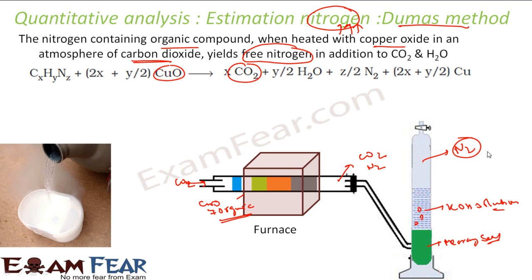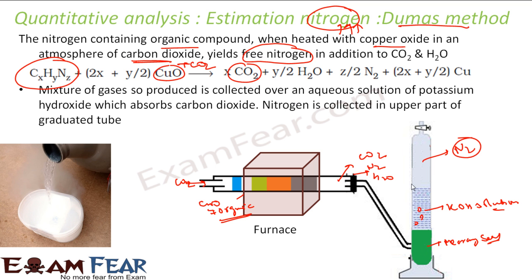And this nitrogen gas will now be used to determine the percentage of nitrogen in the organic compound. Hope you understand, so you have an organic compound, you are heating this very hard in presence of CuO, CuO and CO2 actually. So you heat in the presence of CuO and CO2. What you get is carbon dioxide gas and water and nitrogen gas and Cu. Here you have water also. So water will mix with KOH. What you get here is nitrogen gas. And then we will analyze the percentage of nitrogen in the organic compound. Nitrogen is collected in the upper part of this tube.